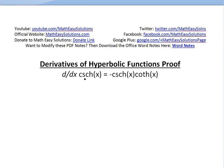Hi, it's time for another Math Easy Solution to discuss another derivatives of hyperbolic functions proof video. Now we'll go over the derivative of the hyperbolic cosecant of x and prove that it equals negative hyperbolic cosecant of x times hyperbolic cotangent of x.